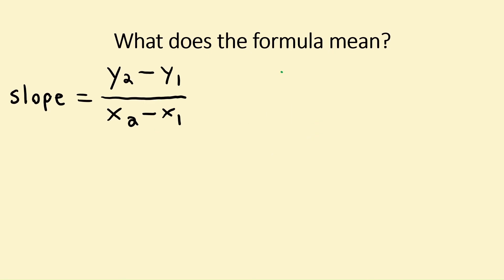Now you might be wondering what this formula actually means. Simply put, when you're trying to find the slope of a given relationship, you always have at minimum two points. Each is made up of an x and a y value.